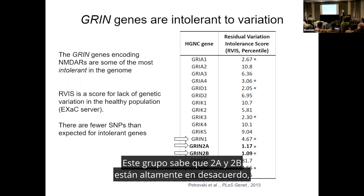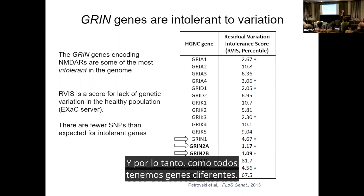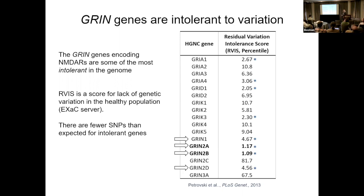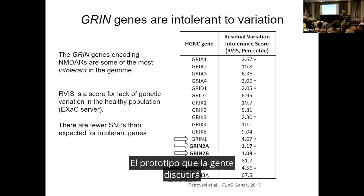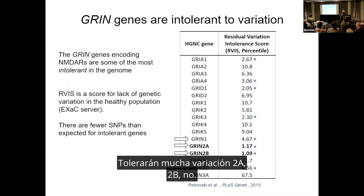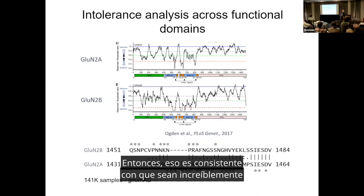Why do we think this? GRIN2A and 2B are highly invariant — very intolerant to variation. We all have different genes, and some genes tolerate variation really well, like olfactory receptors. But 2A and 2B do not, which is consistent with them being incredibly important.